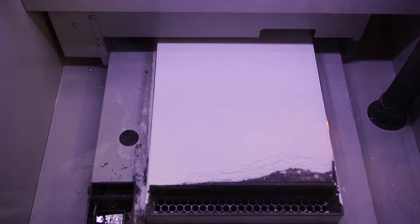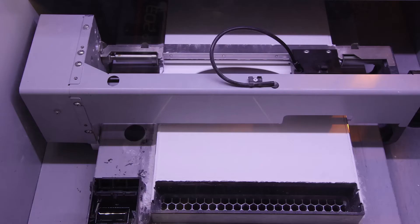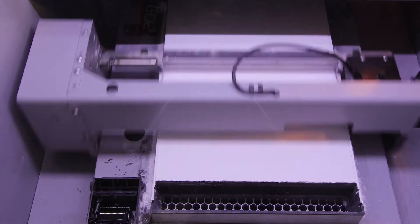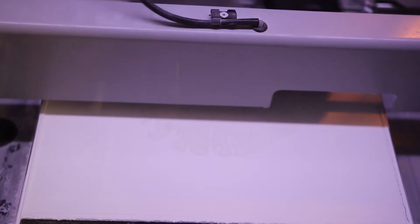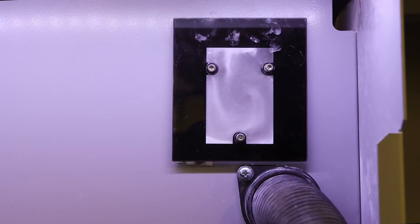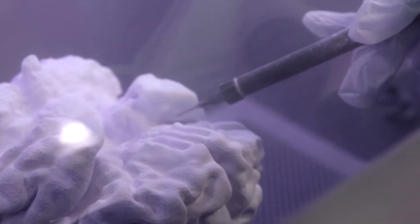We then see the bubble jet printhead moving to deposit binding fluid that will glue that loose powder together to make up your model. The process repeats many times and we end up with a bed full of powder and glue. A vacuum and compressed air are used to suck away and remove the loose powder surrounding your model.